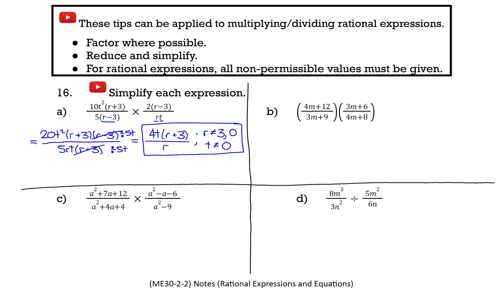For Part B, we have (4m plus 12) over (3m plus 9), times (3m plus 6) over (4m plus 8). Before putting these together into one fraction — since we don't need a common denominator — it would help to factor where possible.